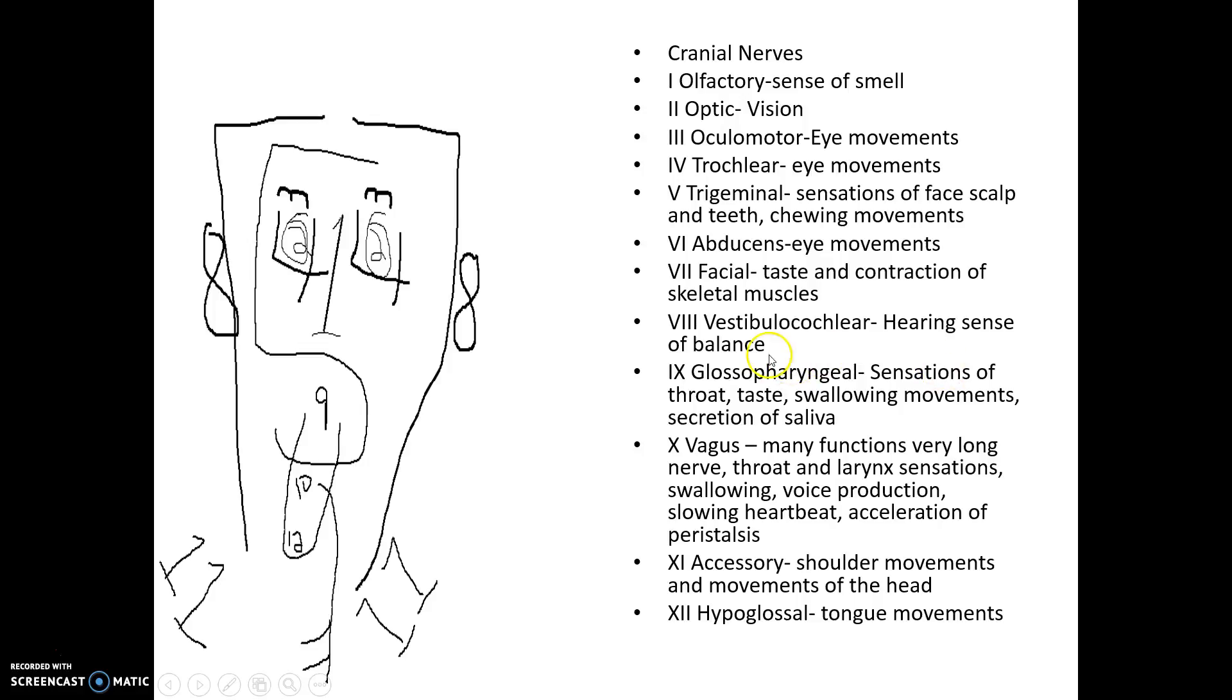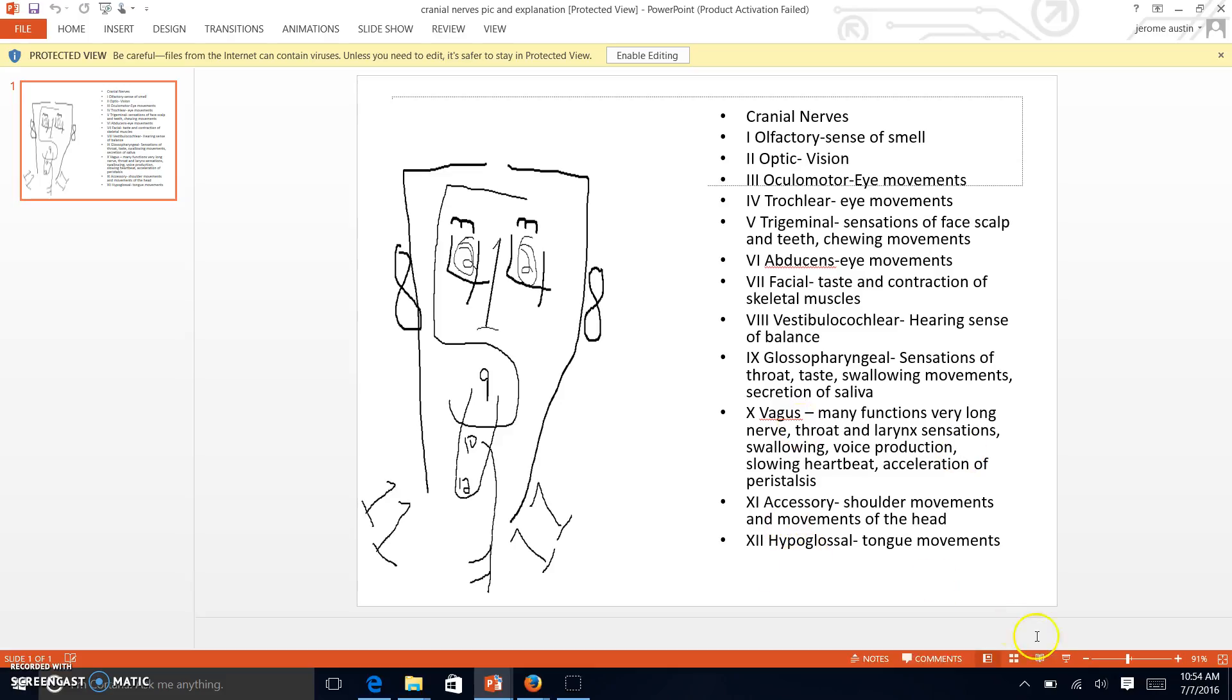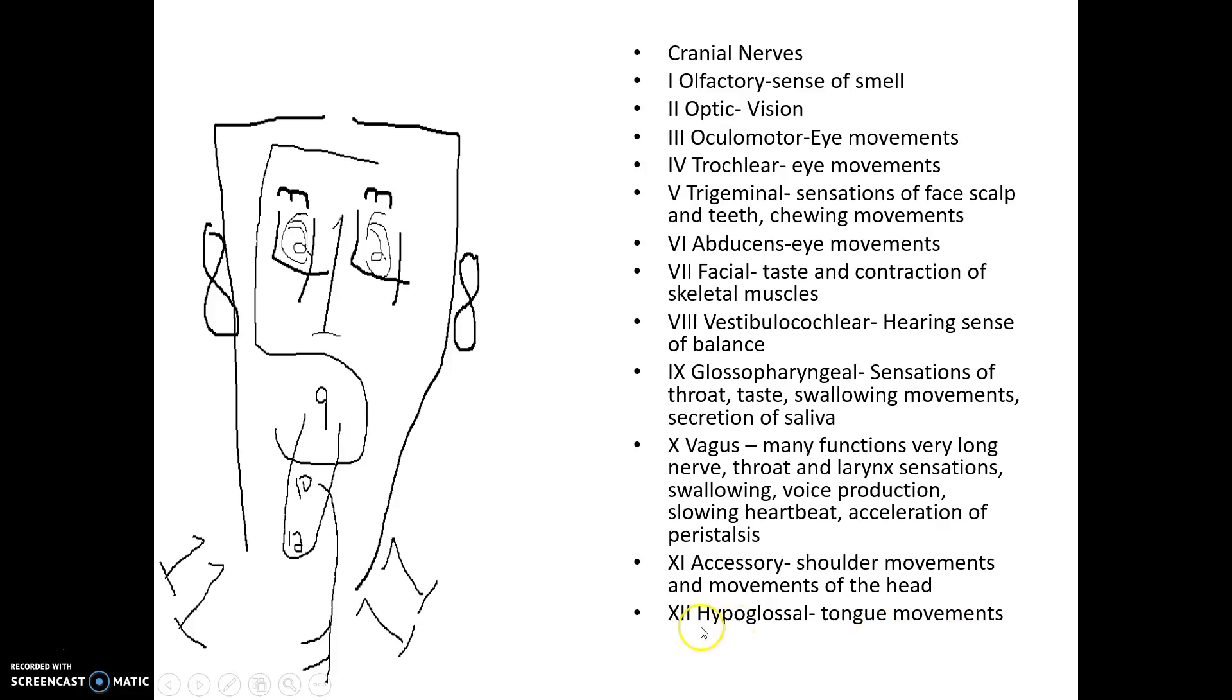Glossopharyngeal, which glosso basically means tongue, pharyngeal means throat, so this gives us the sensations in our throat and tongue area. Vagus nerve, which extends way down and makes up a big part of that parasympathetic nervous system. Accessory, cranial nerve 11, which is shoulder movements and certain movements of the head. And hypoglossal means hypo below, glossal tongue.